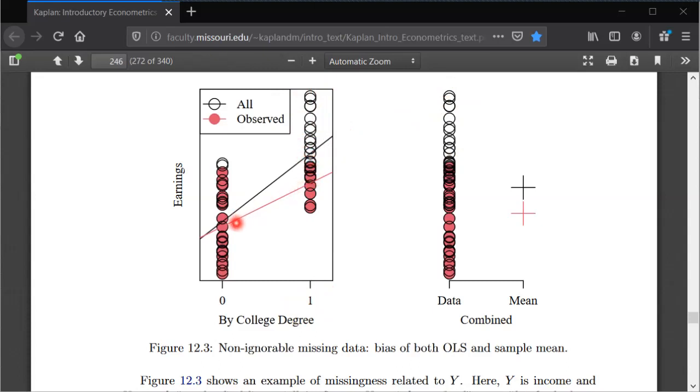And so because of that, if we just look at the no college sample, our sample mean of the observed values is actually pretty close to the sample mean of all the values if hypothetically we were omniscient and we knew the earnings even when they weren't reported.